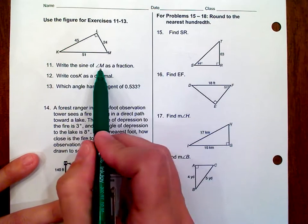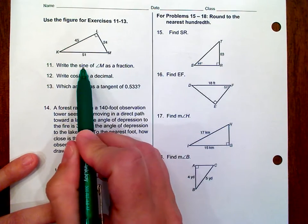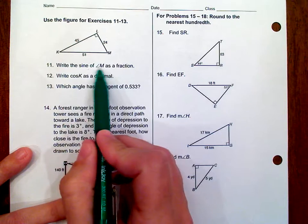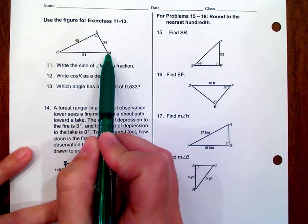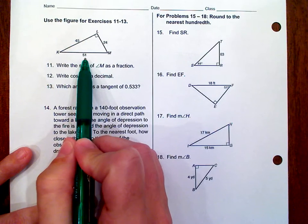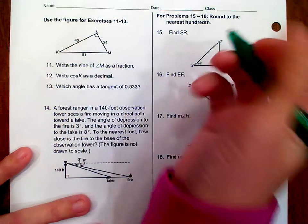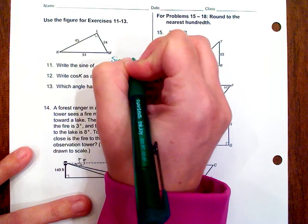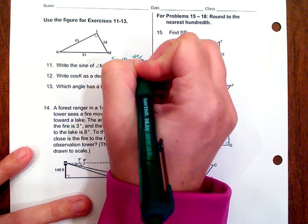Now, it's not wanting you to find angle M, it's just wanting you to write that ratio. Remember, sine is opposite over hypotenuse. So, here is your angle M, opposite is 45, over your hypotenuse, which is 51. So the sine of M is equal to 45 over 51.